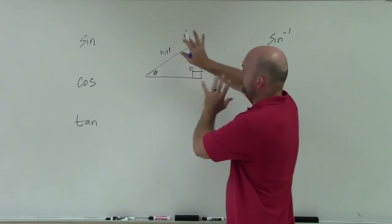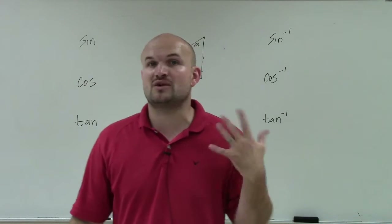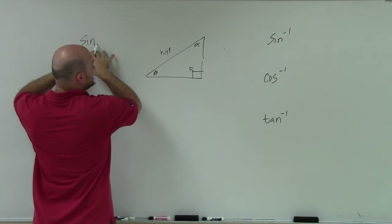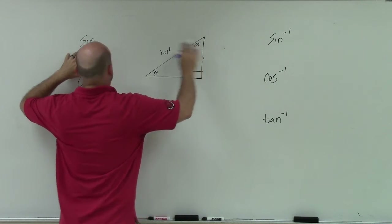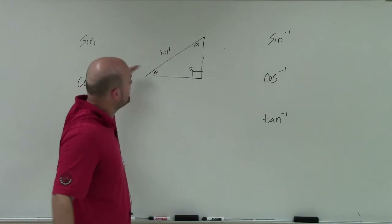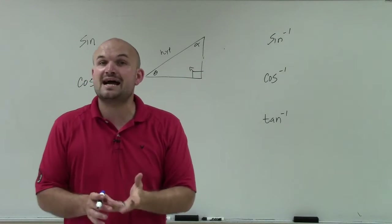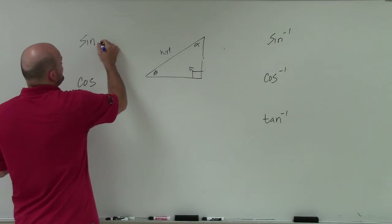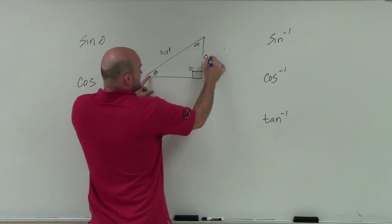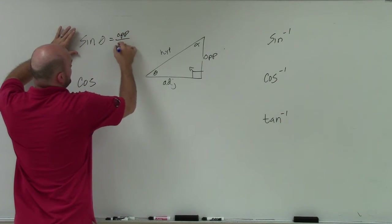We know the hypotenuse is always there. The sine, cosine, and tangent are basically just ratios — they're comparisons. The sine is comparing the length of the opposite side over the hypotenuse: how does the opposite side compare to the hypotenuse? The hypotenuse is always the longest side. So if I say the sine of theta, that means the side opposite theta over the hypotenuse.